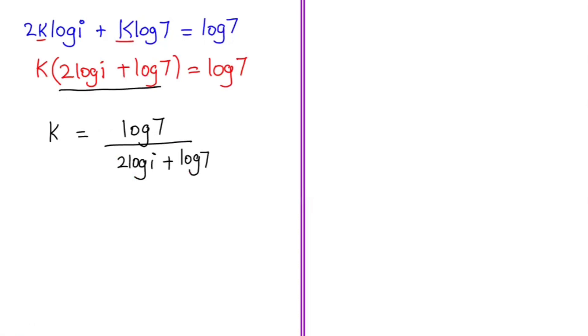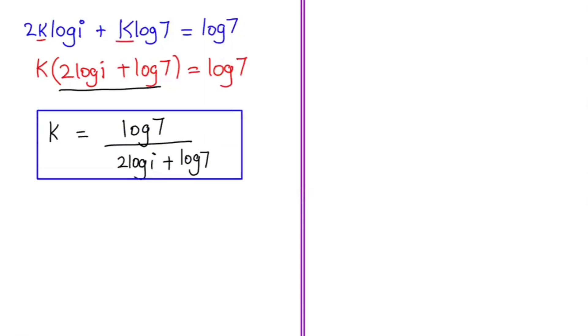So k is equal to log of 7 over (2 log of i plus log of 7). This is another way to find the value of k. Thank you so very much for watching my video. If you like my video, please do subscribe to my channel.